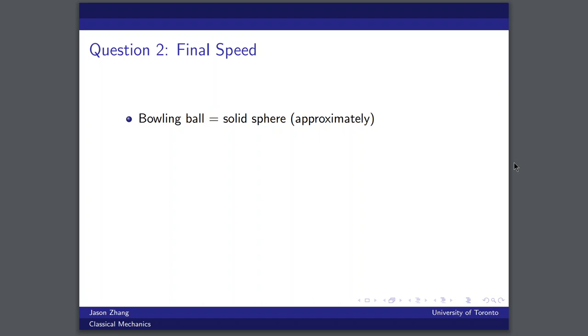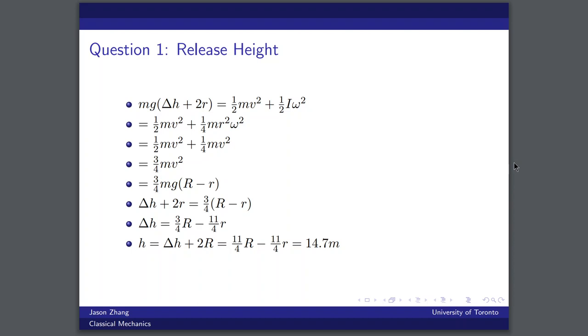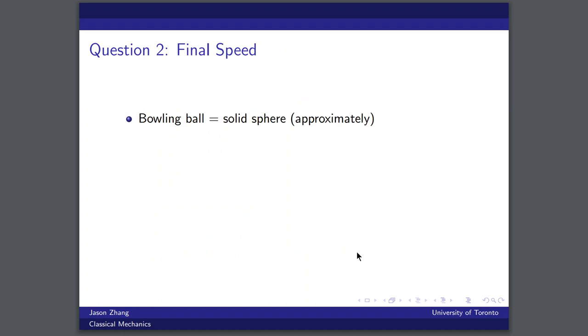So moving on to question two. Also, I should note for the last question, excuse me, if we were dealing with a point particle that doesn't have any rolling motion associated with it, doesn't have any rotational energy, this final answer would be lower than 14.7 meters because the object is not losing energy to its rotation. So now moving on to question two, let's talk about the bowling ball.